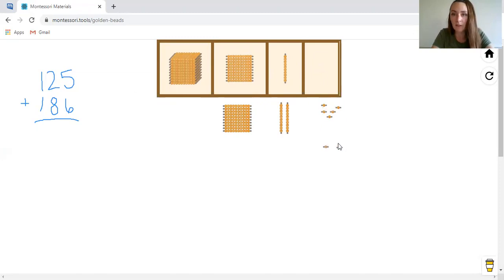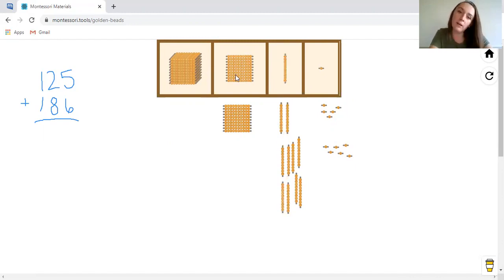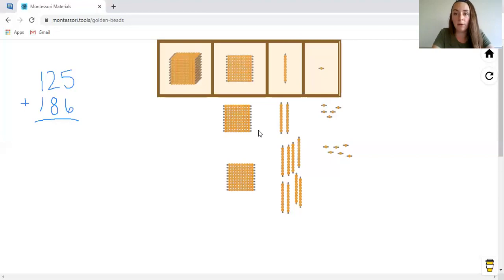And we're going to add 186. So let's do six unit beads: one, two, three, four, five, six unit beads. And then add eight 10 bars for the 10 spot: one, two, three, four, five, six, seven, eight, and then one hundred square. Move that down here so we can kind of see the separation in our numbers. So we have 125 plus 186.